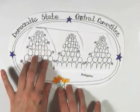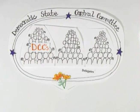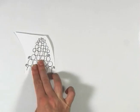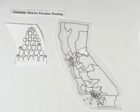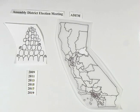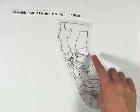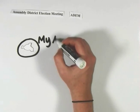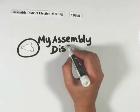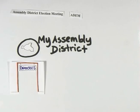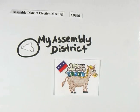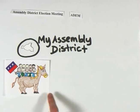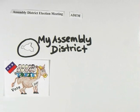Another way to become a delegate to the State Democratic Central Committee is to be elected as a delegate by Democrats in your assembly district. There are 80 such districts in California. Every two years, there's an election at a meeting called the Assembly District Election Meeting, or ADEM. These meetings happen in January of odd-numbered years. You can run to be a delegate or come to the ADEM and vote for delegates if you're a registered Democrat in the assembly district and have been since the registration deadline of the previous general election.